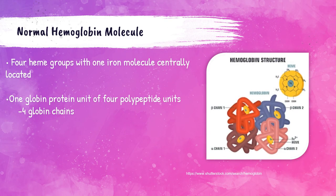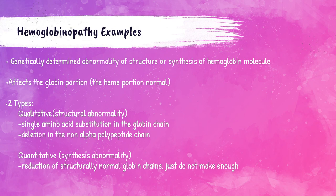I discussed the hemoglobin molecule in my previous lecture on hemoglobin, but here is a picture of what the structure of hemoglobin looks like. There are four heme groups with one iron molecule in each, centrally located. Along with those heme groups there are four globin chains, which is very important for this particular lecture. A hemoglobinopathy is a genetically determined abnormality of the structure or production of the hemoglobin molecule — most specifically this abnormality affects the globin portion of the molecule, so the heme portion is normal.